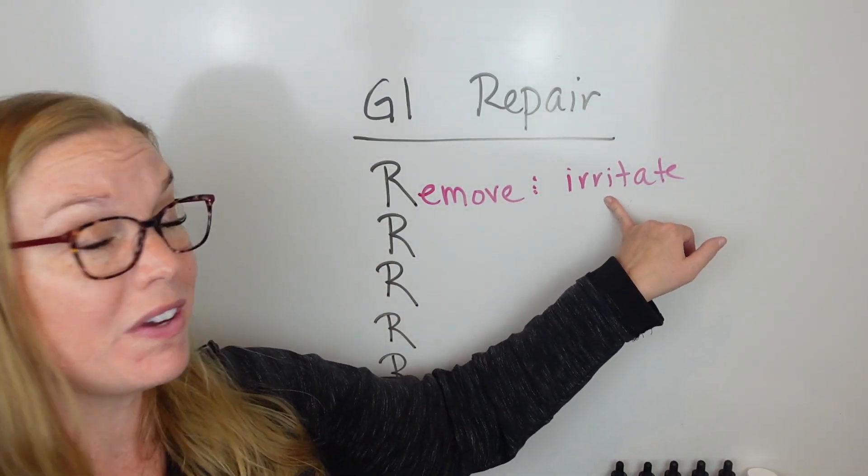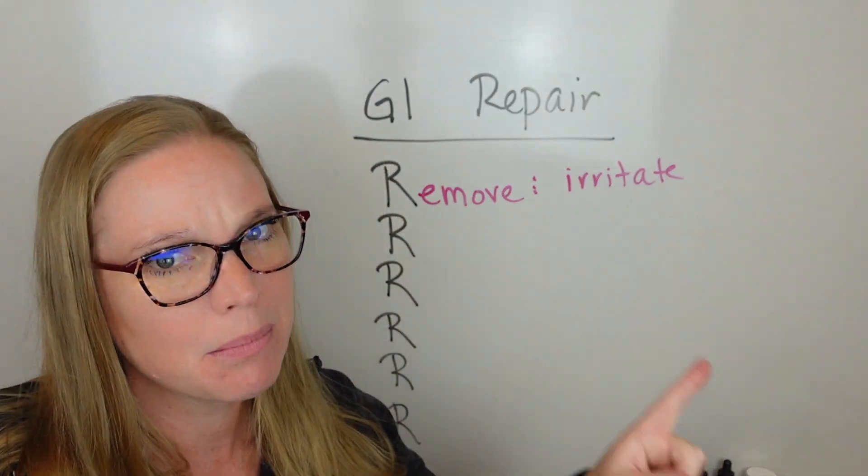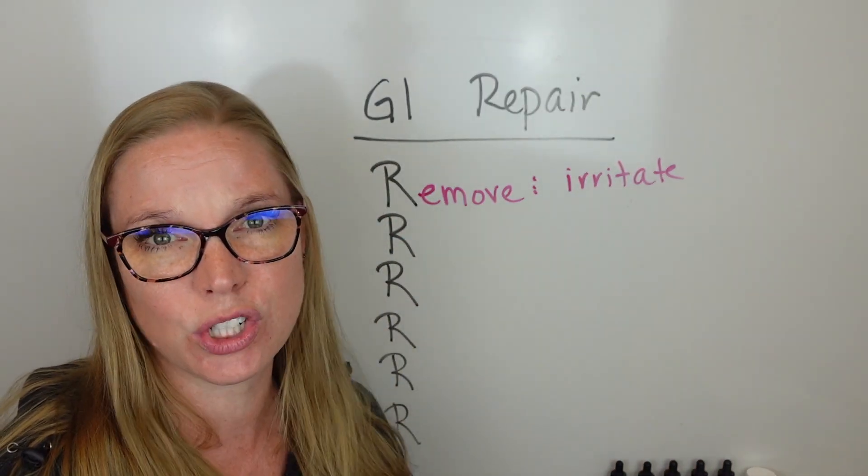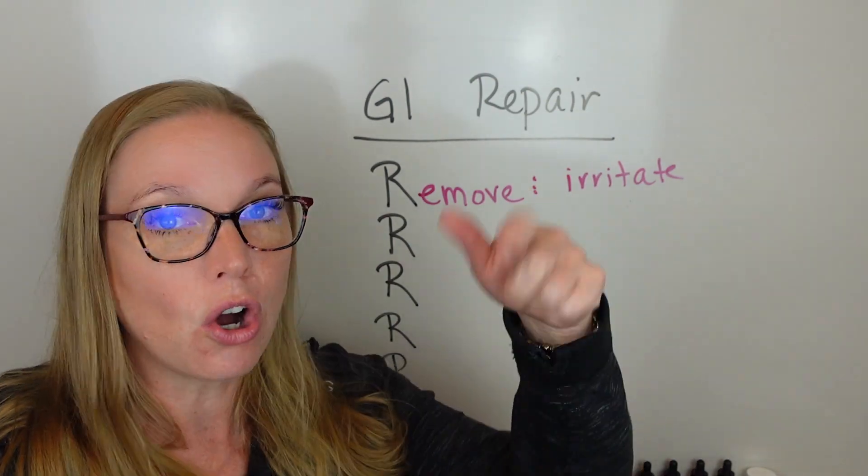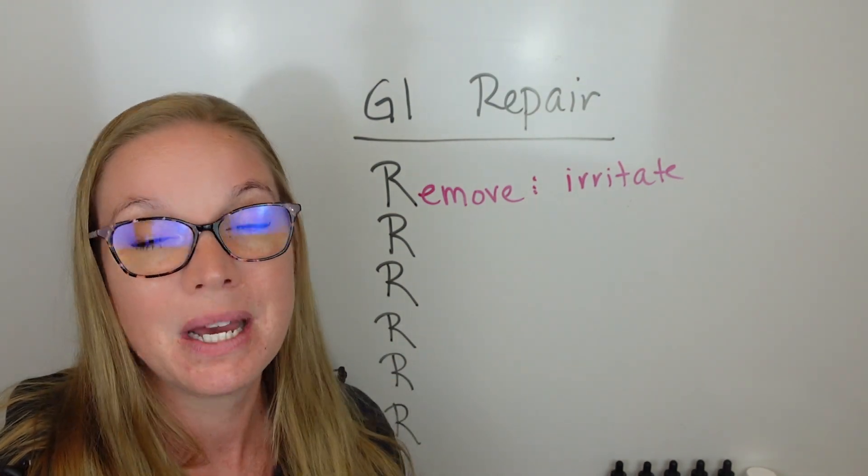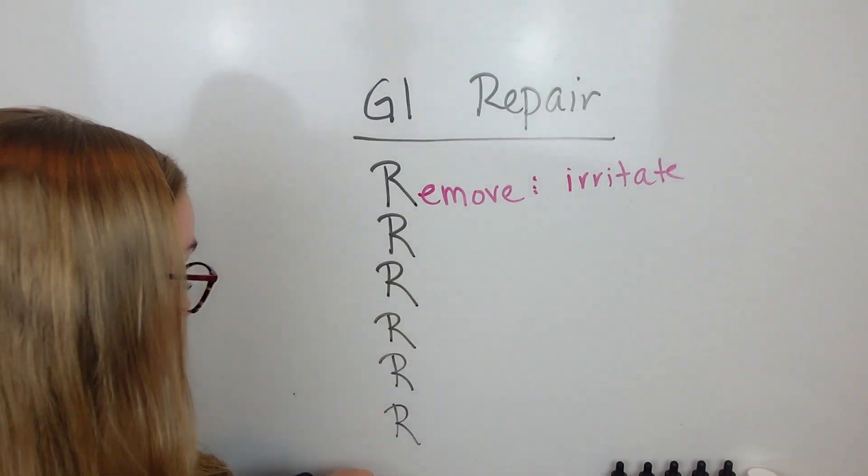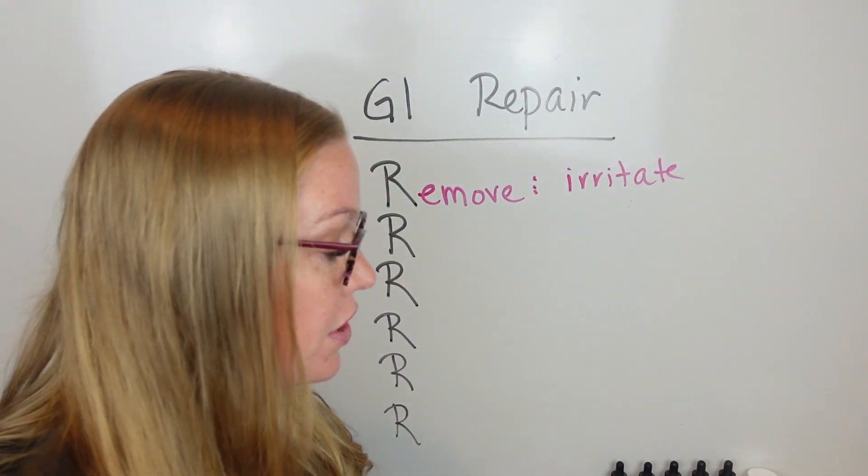You want to make sure you're removing things that are causing a problem. But sometimes you don't know what's there to remove if you're not doing a GI map. Go below this video, click that link, learn how to work with me and how you can get your own GI map to dive into some of these things to make sure that you're not missing any of these steps. So remove is the first one.